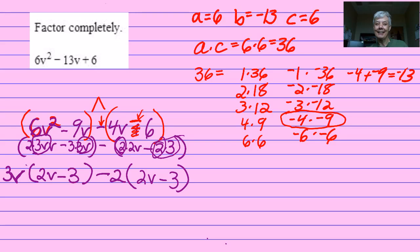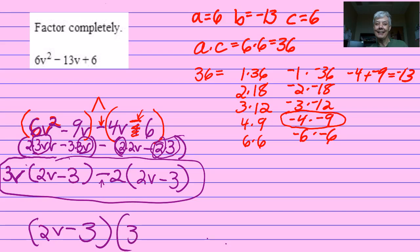So now in the entire polynomial, we have 2V minus 3 on each side of the middle sign, which means 2V minus 3 is our greatest common factor. So I write down 2V minus 3 and then the leftovers 3V minus 2.